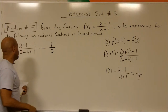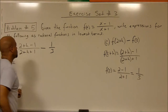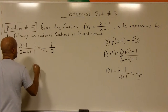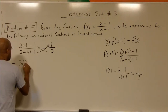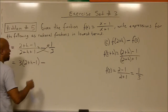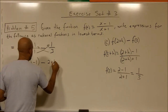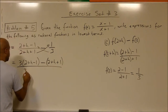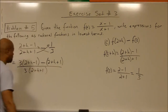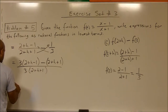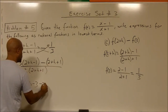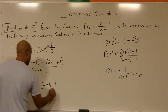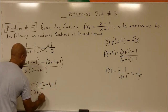To simplify, we need a common denominator for these two fractions. We multiply 3 to the first numerator and multiply 2 plus h plus 1 to the second numerator, giving us 3 times the quantity 2 plus h minus 1, minus 1 times the quantity 2 plus h plus 1, all over the denominator 3 times 2 plus h plus 1.